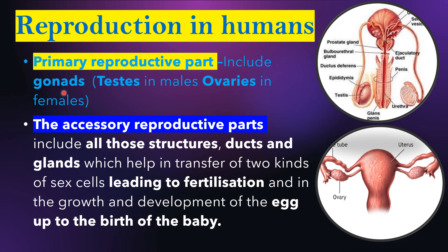Primary reproductive parts include gonads — testes in males and ovaries in females. These organs come under the primary reproductive part because sperms are produced from the testis and eggs are produced from the ovaries. All other structures — ducts and glands present in both male and female reproductive systems — are called accessory reproductive parts. Accessory reproductive parts include all structures, ducts, and glands which help in transfer of sex cells leading to fertilization and in the growth and development of the egg up to birth.